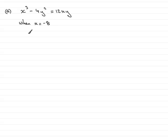Substituting into the equation, we have (-8)³ - 4y² = 12(-8)y. Cleaning this up, (-8)³ is -512, then we have -4y² = -96y.